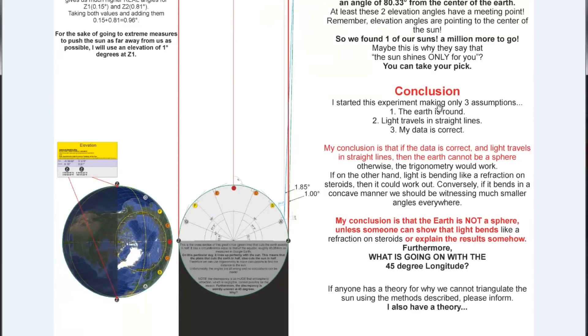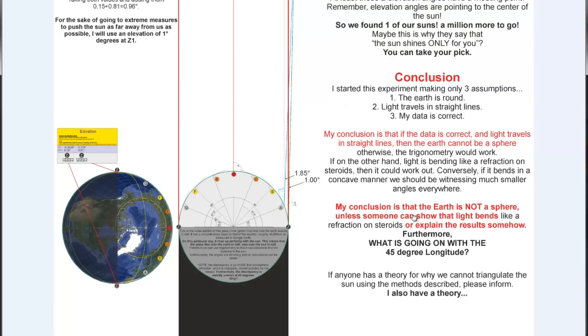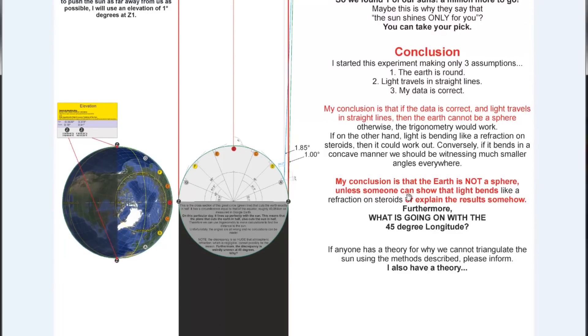So my conclusion is I started the experiment making only three assumptions. The Earth is round, light travels in straight lines, and that my data is correct. My conclusion is that if the data is correct and light travels in straight lines, then the Earth cannot be a sphere. Otherwise, the trigonometry would work. If on the other hand, light is bending like a refraction on steroids, then it could work out. Conversely, if it bends in a concave manner, we should be witnessing much smaller angles everywhere. My conclusion is that the Earth is not a sphere. Unless someone can show that light bends like a refraction on steroids or explain the results somehow.